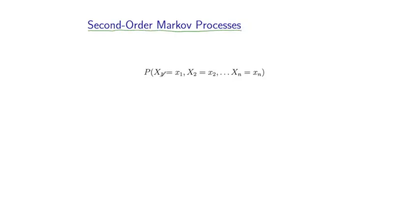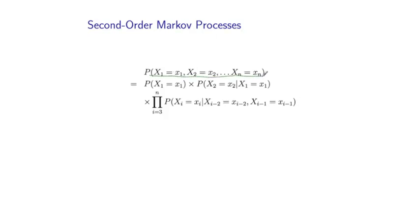So the task, again, is to model the joint distribution over a sequence of n random variables. And in a second-order Markov process, we make the following assumption: that this joint probability is, again, a product of terms.